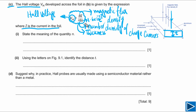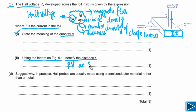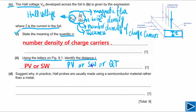For the first part of C, the meaning of quantity N is the number density of charge carriers. For the second part, using the letters on figure 9.1, the distance T can be identified as PV, or equivalently SW or QT — these are the distances representing the thickness through which the magnetic field passes.